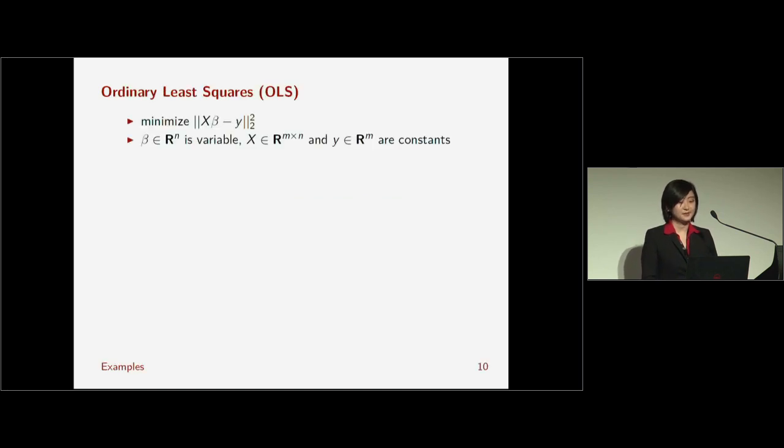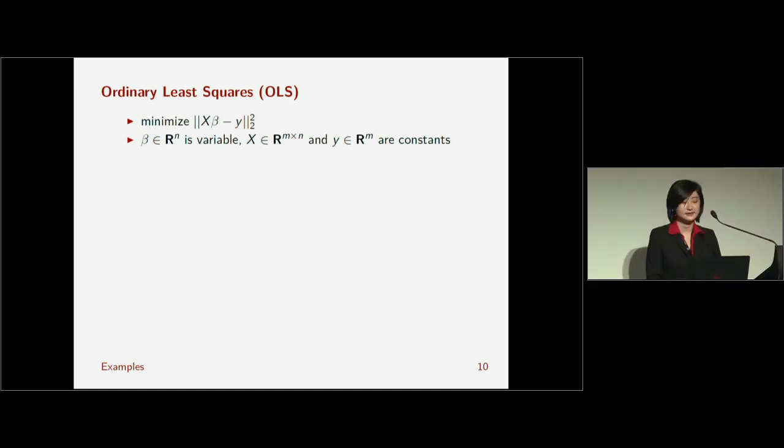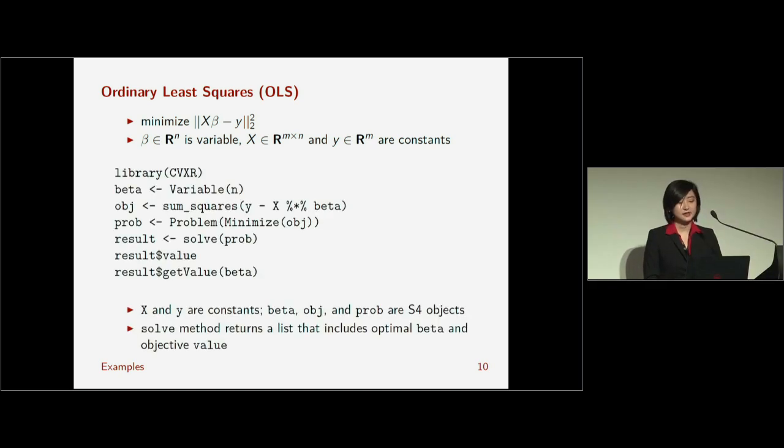So let's jump right into an example. I'm going to start with the simplest thing possible, just to give you a sense of how CVXR syntax works. We're going to solve OLS, least squares, minimize X beta minus Y. Beta is our variable, X and Y are constants. So this is the code in CVXR to solve that problem. As you can see, it's not too different from CVX-py, which I showed before. The first line, beta, is we define a variable object of size n. n is something that you would set n equals 5 or something.